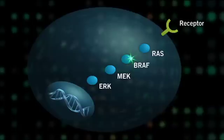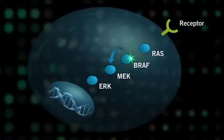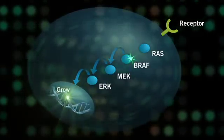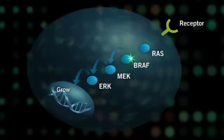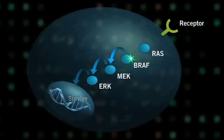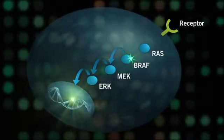These activating mutations tend to occur in one specific region of the gene and are called V600 mutations. Mutant BRAF proteins that are locked into an active state are believed to lead to constant activation of proteins downstream of BRAF. This may lead to uncontrollable cell growth and potentially contribute to cancer.